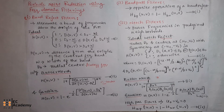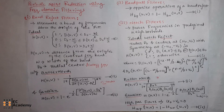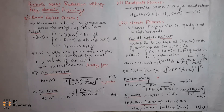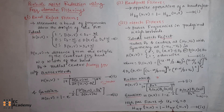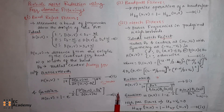The notch pass filter is given as h_np(u,v) = 1 minus h_nr(u,v), where h_np is the notch pass filter and h_nr is the notch reject filter. This concludes the topic of periodic noise reduction using frequency domain filtering. Hope you have understood the topic. Thank you.